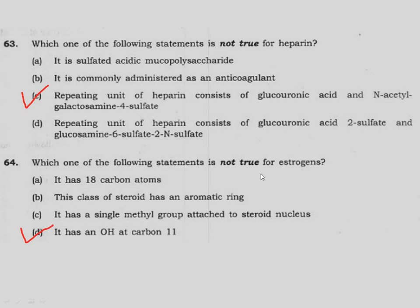Question 64: Which one of the following statements is not true for estrogen? It has 18 carbon atoms — correct. This class of steroid has an aromatic ring — correct. It has a single methyl group attached to the steroid nucleus — correct. Option D states it has an OH group at carbon-11 — this is wrong; there is no group attached to carbon-11. So the correct answer is option D.